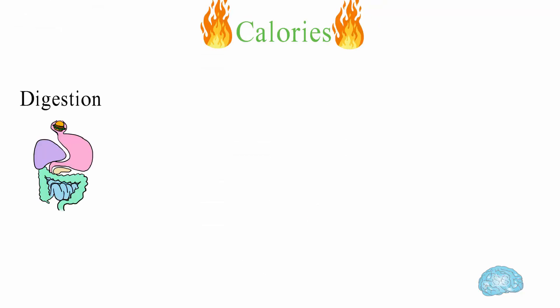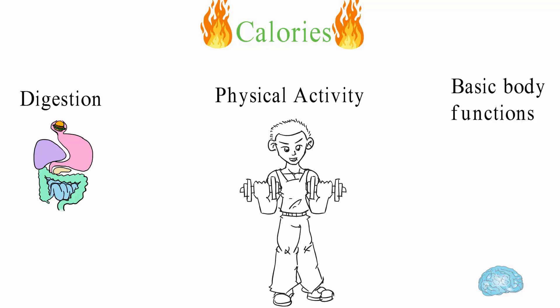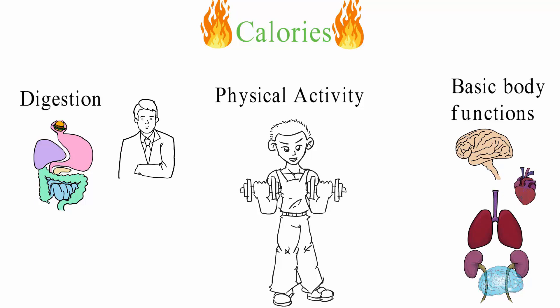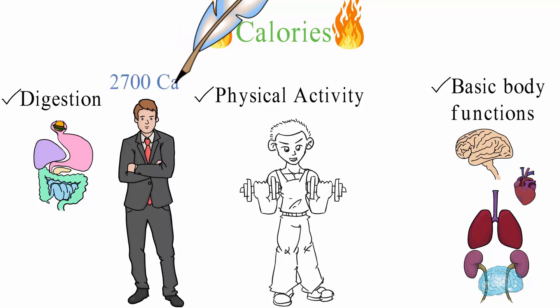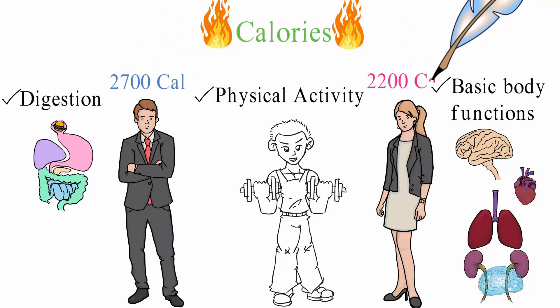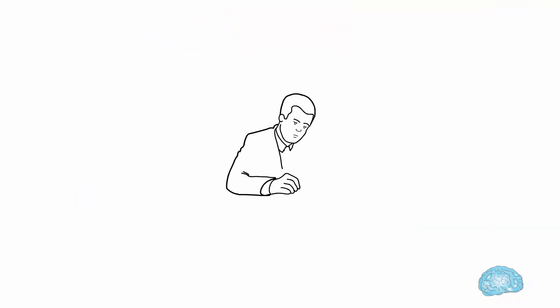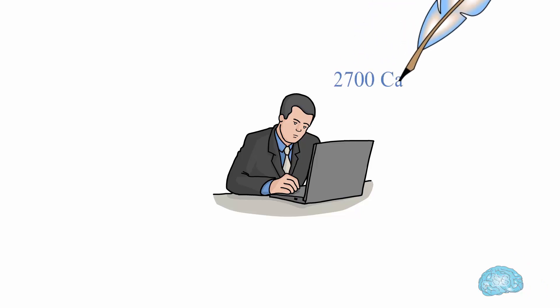The calories you eat are burned by performing three main tasks: digestion, physical activity, and by supporting the basic functions for organs and tissues. On average, the amount of calories required for a man to perform all these three tasks is about 2700 calories. For a woman, it's about 2200 calories. So, if an average man who does a desk job eats exactly 2700 calories a day, then all the calories will be burned and there won't be any fat storage in the body.